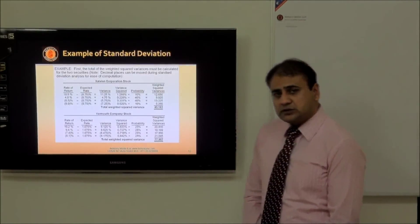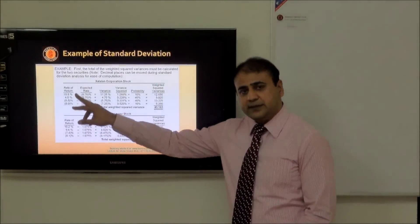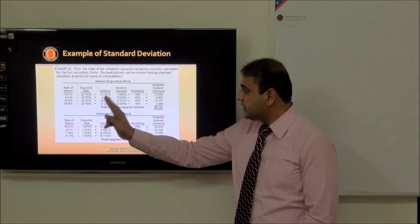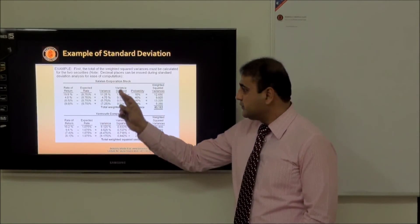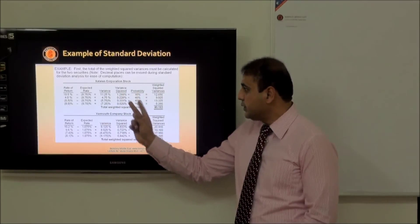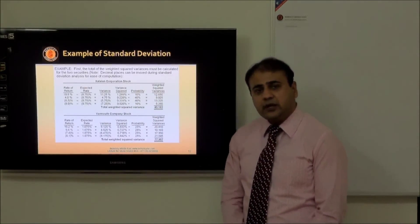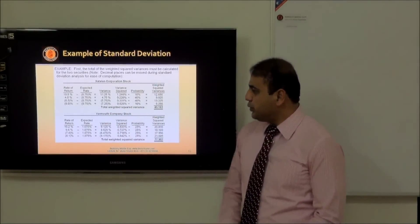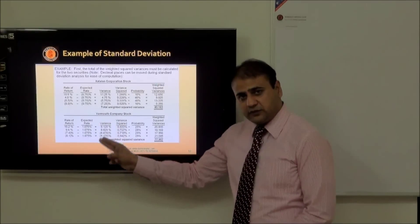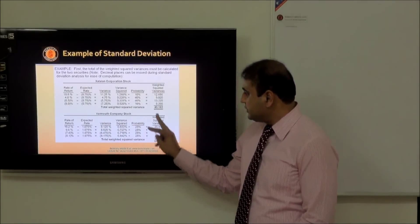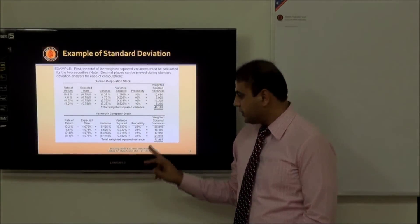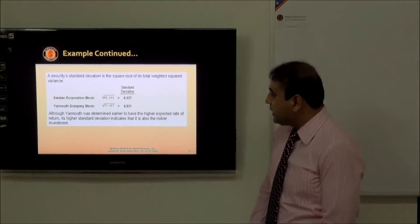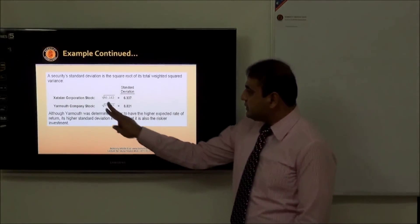There are two stocks with us: stock X and stock Y. This is the rate of return, then we have expected rate. Surely this is the variance - we can take the square of the variance, it will give you this answer. Probability is already with you, you multiply with it, this will give you weighted square variance. Same way you have to calculate the total - this will be the accumulated weighted square variance. Same way you can calculate for Y. If you compare these two, this is 40, this is 77, so here the weighted square variance is more than X.